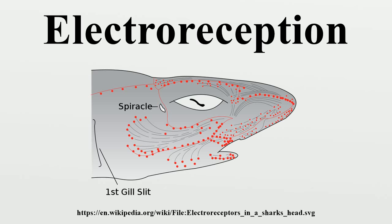In active electrolocation, the animal senses its surrounding environment by generating electric fields and detecting distortions in these fields using electroreceptor organs. This electric field is generated by means of a specialized electric organ consisting of modified muscle or nerves.